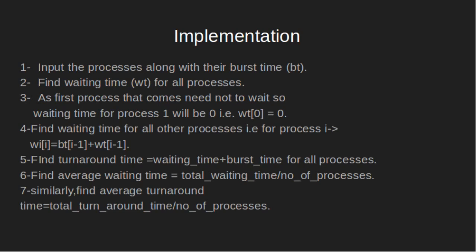Input the processes along with their burst times. Then find waiting time for all processes. To find waiting time, as the first process that comes need not wait, so waiting time for process 1 will be 0. For all other processes, for process i, the waiting time of i equals burst time of i-1 plus waiting time of i-1.